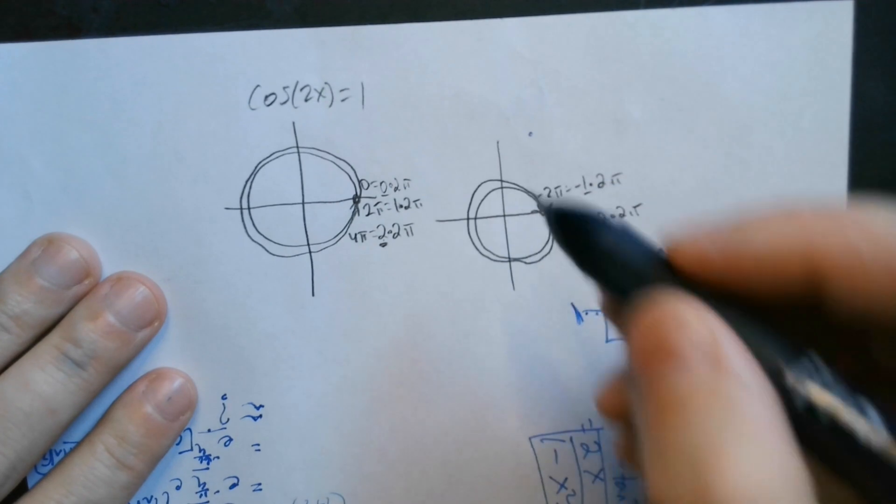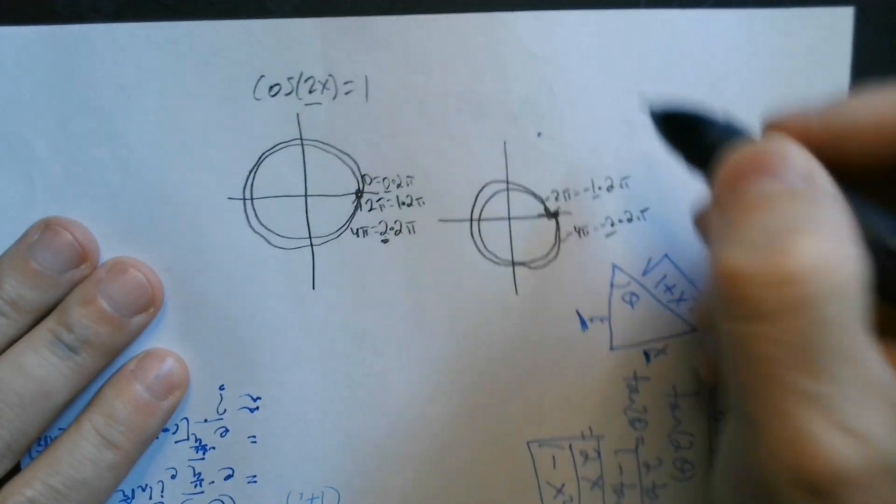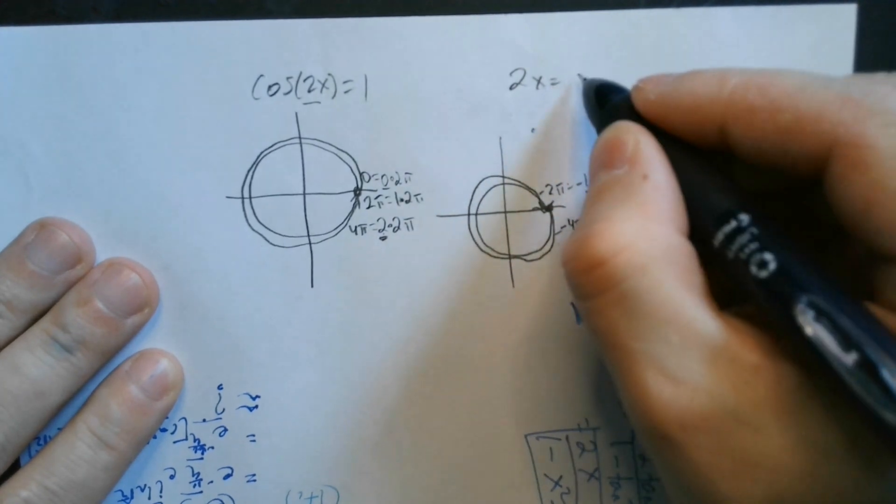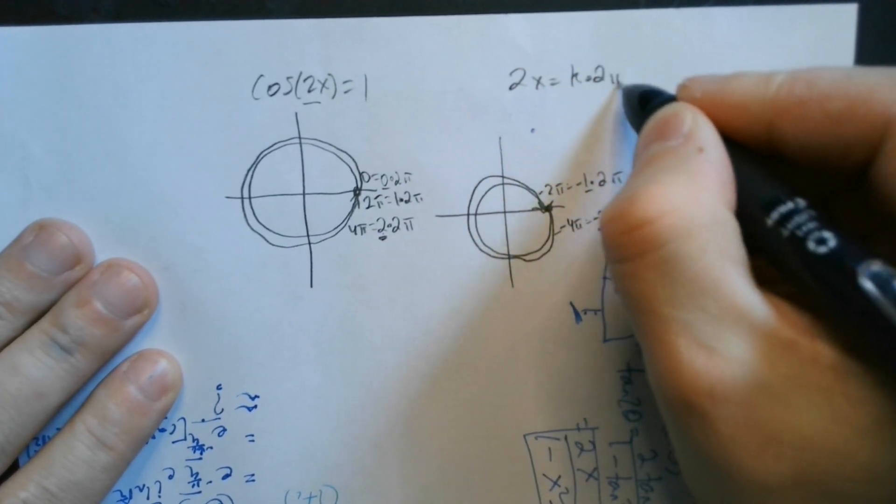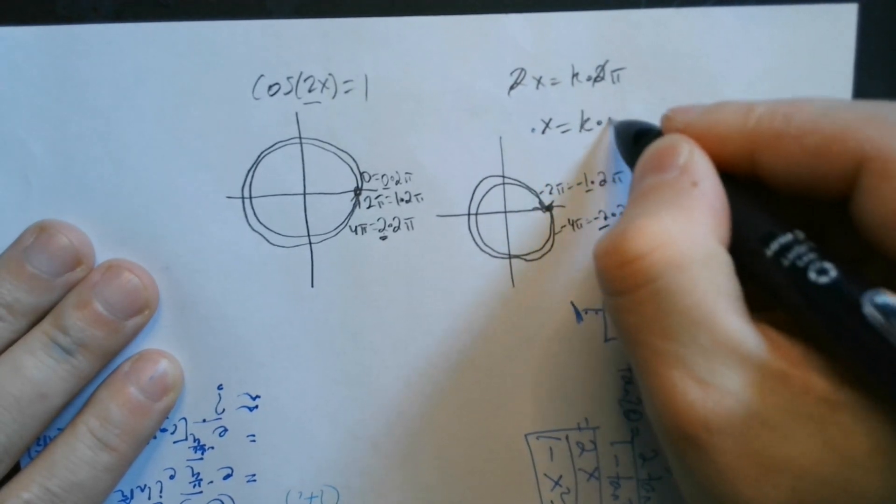So our equation then has to express that. It's got to say, whatever the angle is, which is 2x here ultimately, so 2x has to be equal to k times 2 pi. But now the 2's cancel, so that means x has to be equal to k times pi.